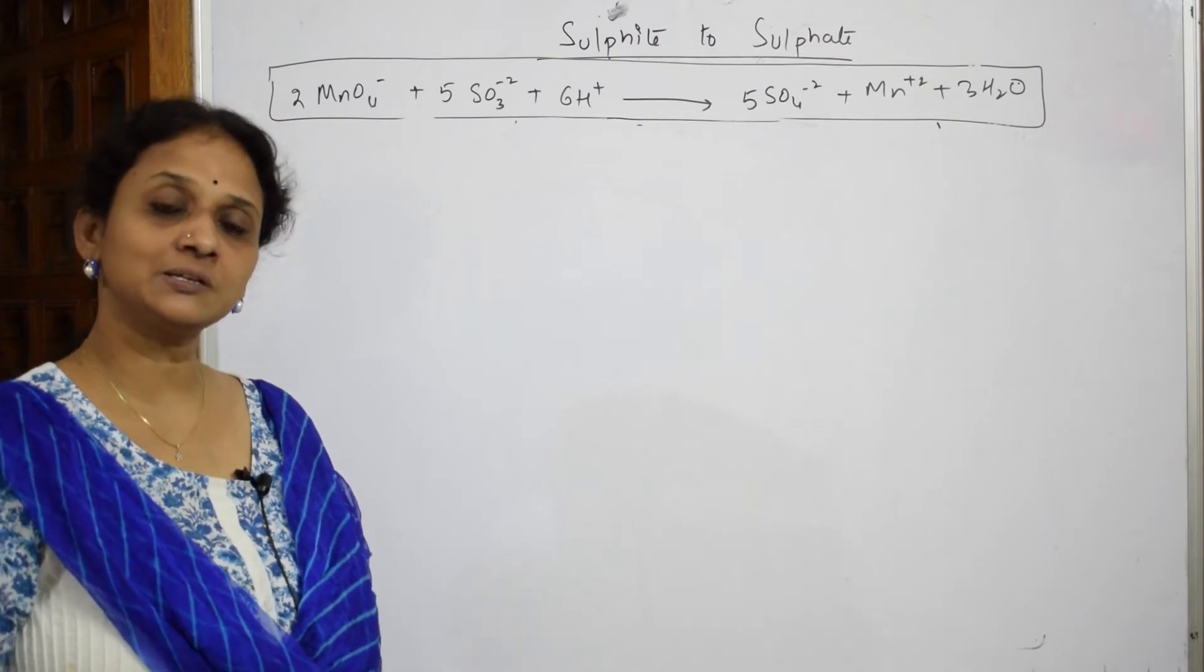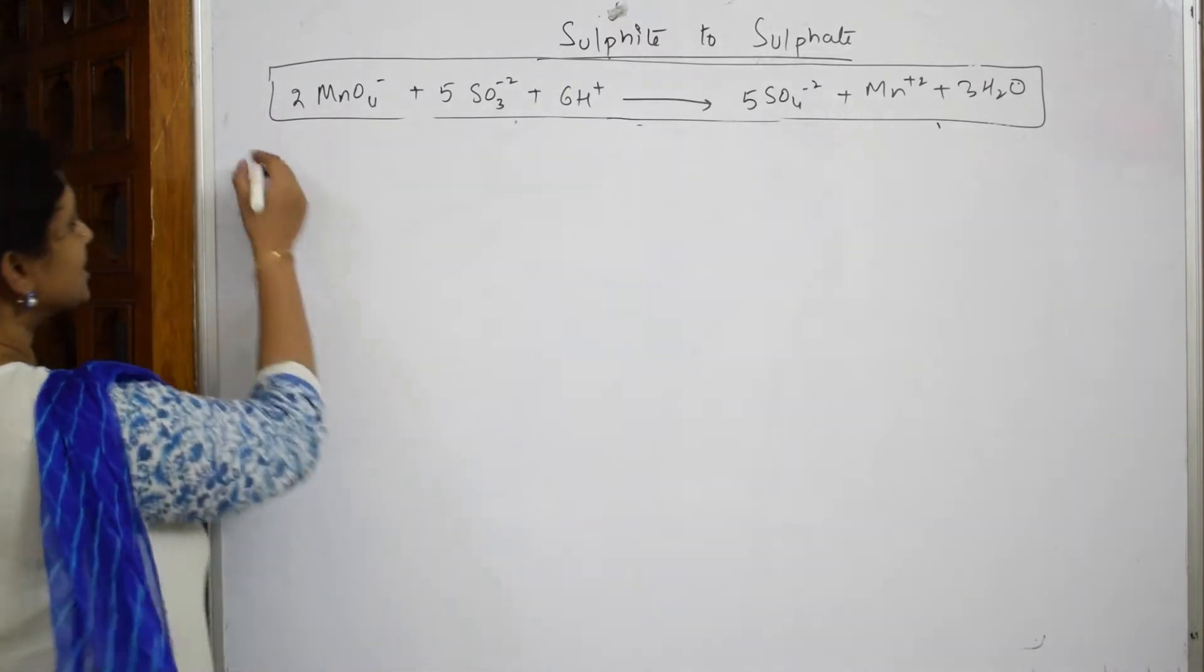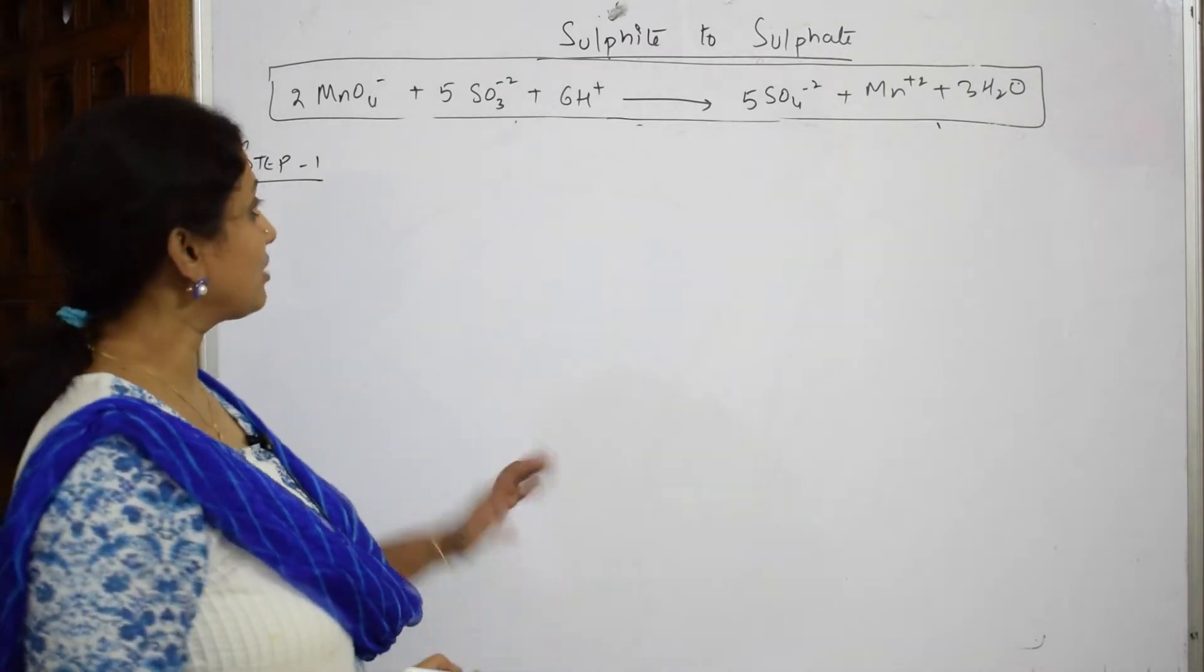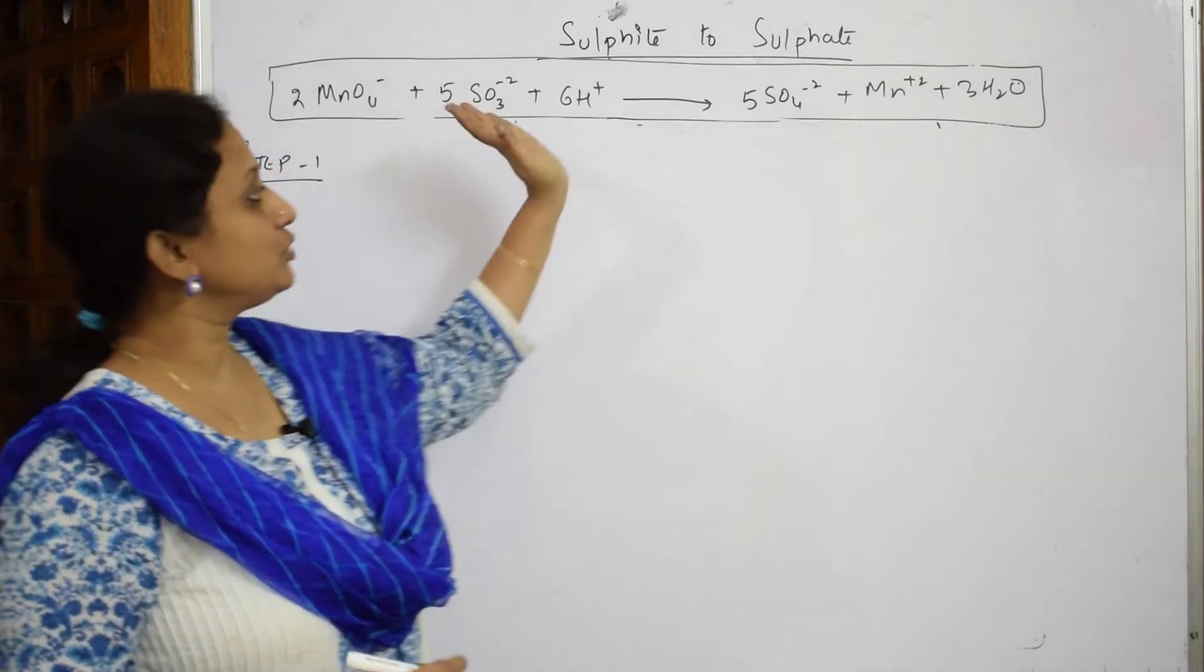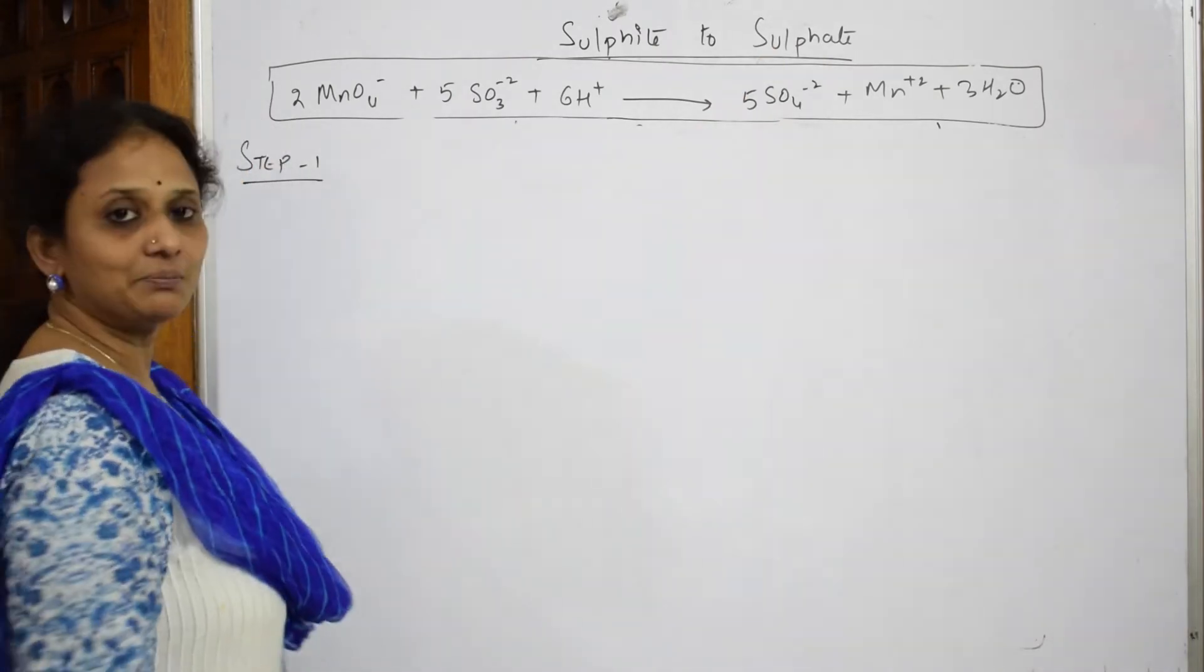I have already done two videos on this. Let us start using half cell reaction method. In half cell reaction method when I have to take step one, as I said in the equation paper what will be given? This part and this part will be given. You need to show the complete step by step balancing and get that balanced reaction.